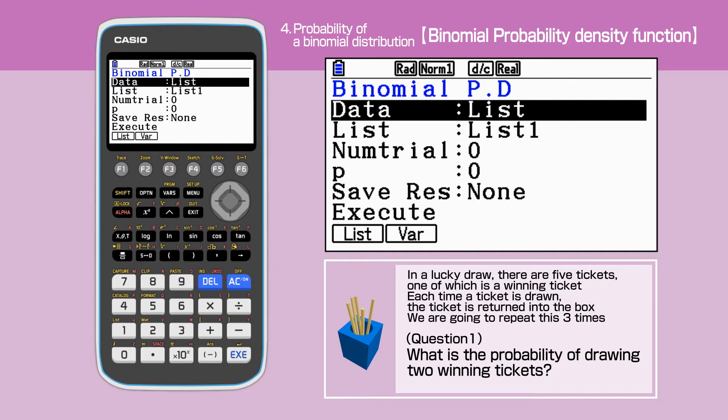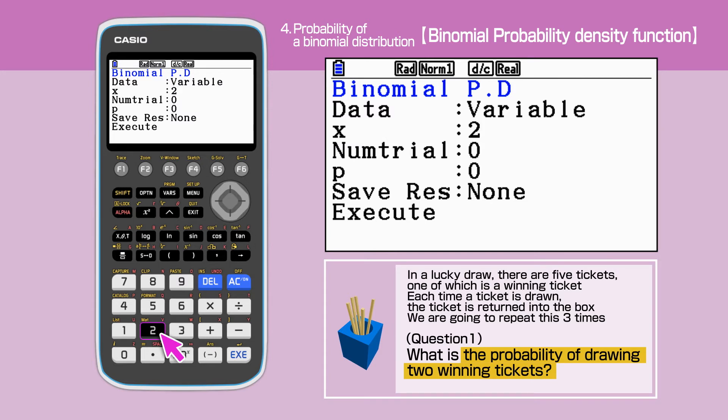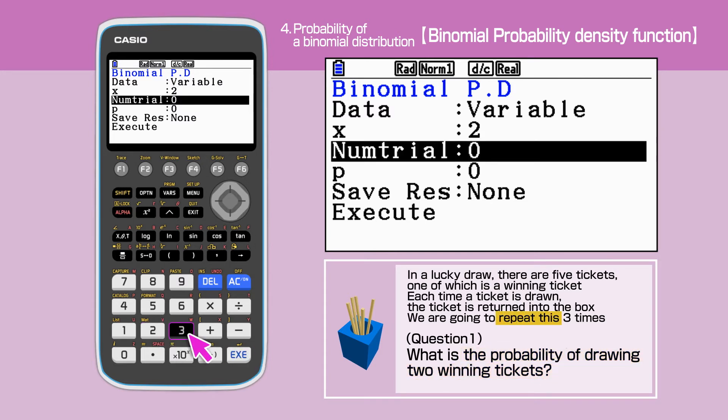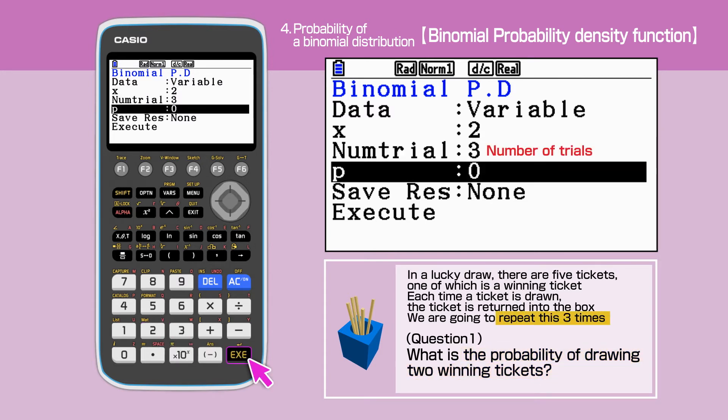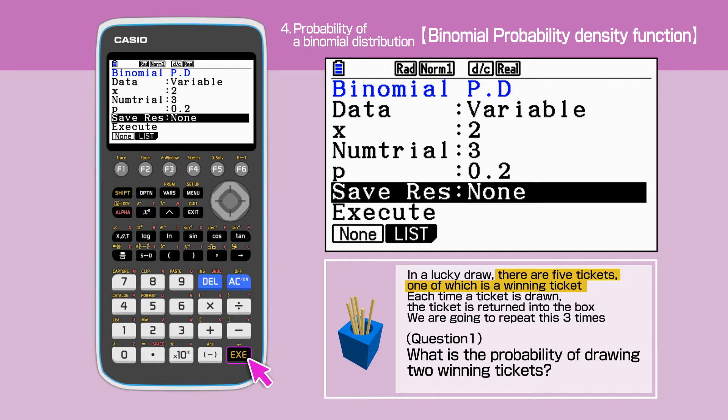The data type needs to be variable, and this can be set by pressing F2. Enter 2 for X, 3 for the number of trials, and 0.2 for P. Make sure to press execute each time you make an entry.